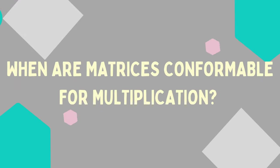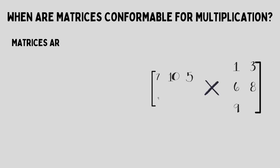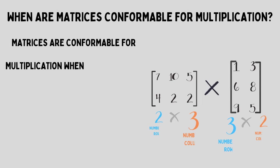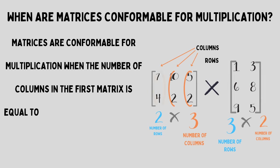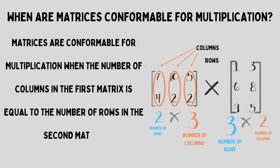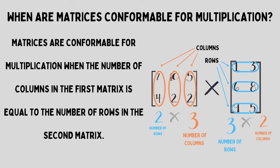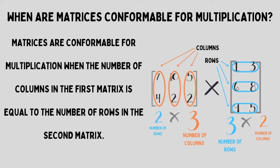So when are matrices conformable for multiplication? This one is a very special one. When multiplying matrices, the number of columns in the first matrix must be equal to the number of rows in the second matrix. As you can see in our example, the number of columns in the first matrix is 3 and the number of rows in the second matrix is also 3. So when we write the order of the matrices and the two digits in the center are the same — in this example, the two threes next to each other — we know that they are conformable.